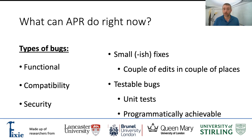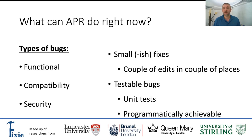If fixing the bugs requires extensive changes to the code, then APR will probably not find a fix — or at least not within a reasonable time or using a justifiable amount of computing resources. And obviously, if we can't test for the presence of the bug, we have no way to let the APR tool know when it has found a fix.